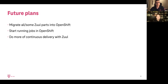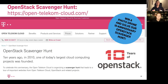Future plans for our installation: at least migrate some parts — if not everything — onto an OpenShift cluster. We are not yet clear on which project to use for that, whether to use an existing project or come up with our own solution, but this is a clear direction for us. We also plan to start running some jobs in the OpenShift cluster instead of spinning VMs. And definitely do more continuous delivery with Zuul — we are already doing some parts like publishing documentation to web servers, but we would like to do more.